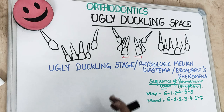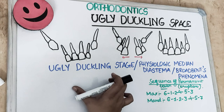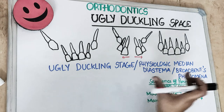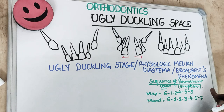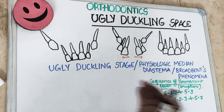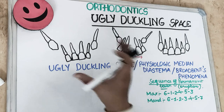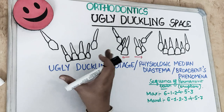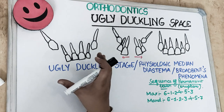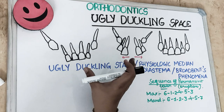The ugly duckling stage is also known as physiologic median diastema or the broadband phenomena. This situation — the ugly duckling stage — is described by the broadband.